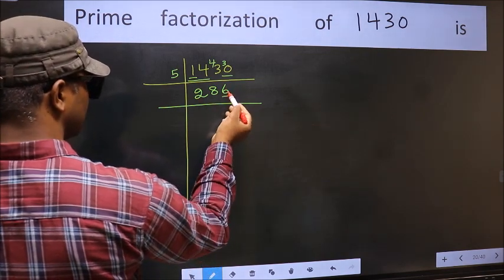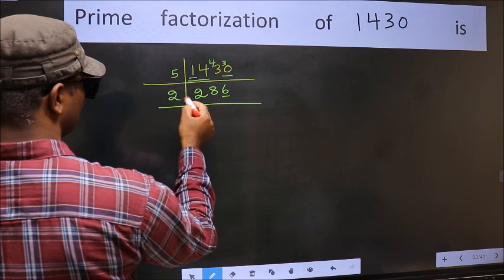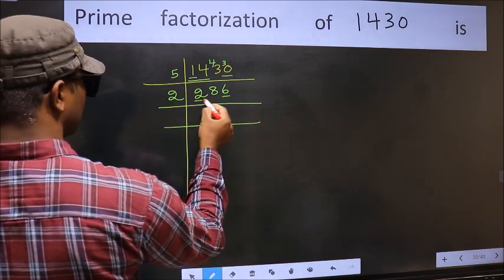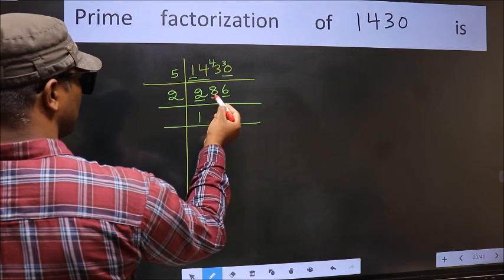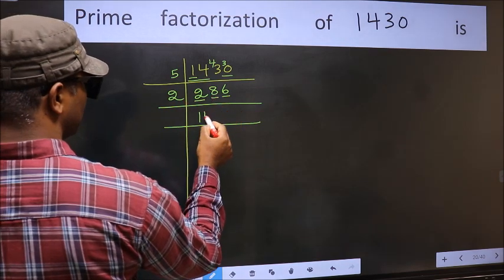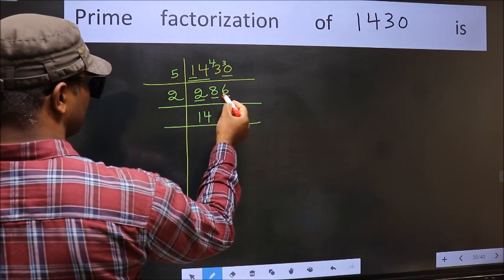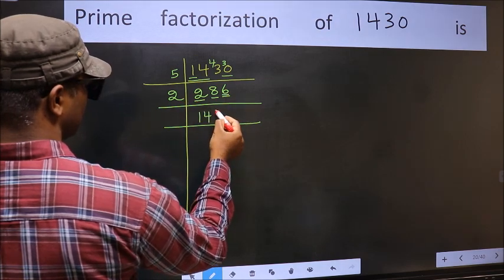Now last digit 6 is even, so take 2. First number 2, when do we get 2 in 2 table? 2×1=2. The other number 8, when do we get 8 in 2 table? 2×4=8. The other number 6, when do we get 6 in 2 table? 2×3=6.